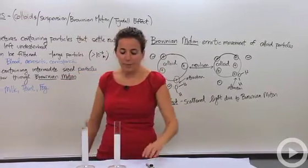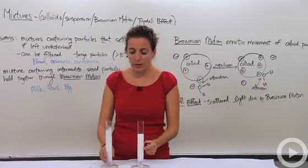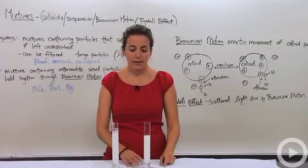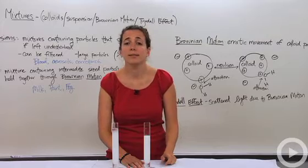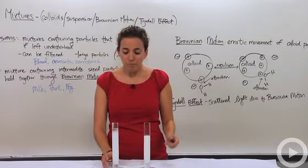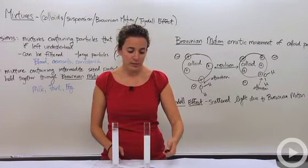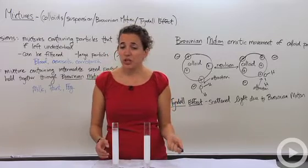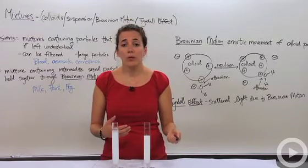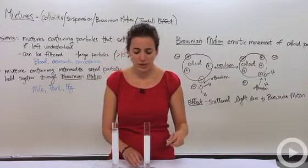But let's look at it here in the lab. One of these is a colloid and one is a suspension. If I shine my light source, which is this red laser beam, through them, one of them should not allow the light to go through and the other one should. Let's test it out.